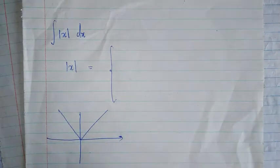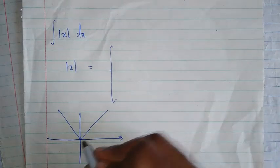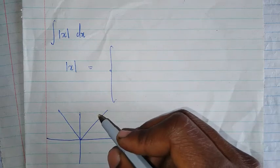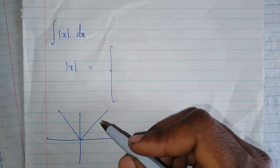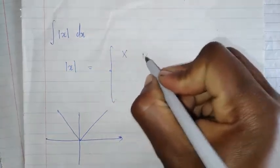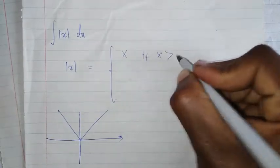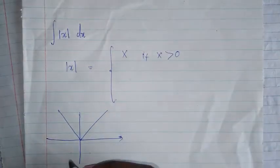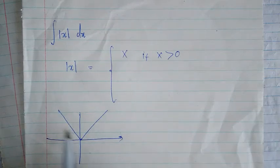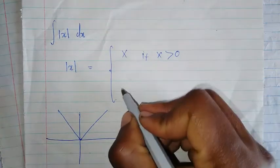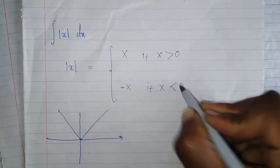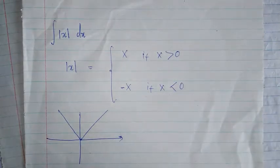This side is the positive values for x, so it's just an ordinary x — we're going to say x if x is greater than zero. And this side is the negative values of x, so we're going to say negative x if x is less than zero.